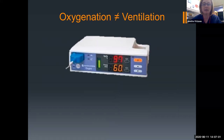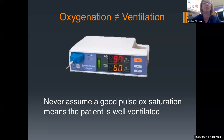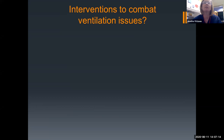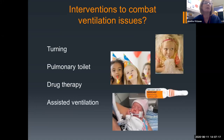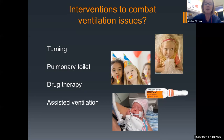We always say that oxygenation and ventilation are not the same thing. We can't assume that a good pulse ox saturation means our patient is well ventilated. Interventions we're going to use to combat ventilation issues include turning, pulmonary toileting, getting them up walking, and drug therapy — most likely Narcan. If a patient is in pain and we give them a little morphine, that's great, but if we give them a lot of morphine, ventilation is depressed. The same thing applies conversely — if they're in too much pain to take a good deep breath, fentanyl or whatever you're using can be an intervention to combat the ventilation issue.